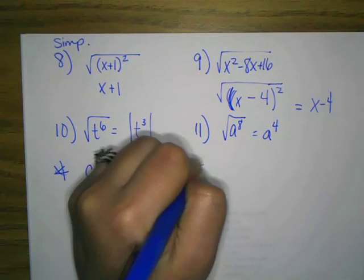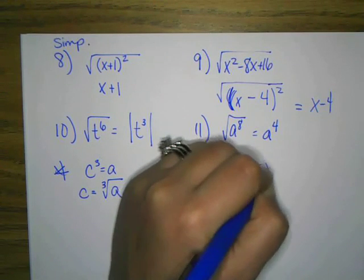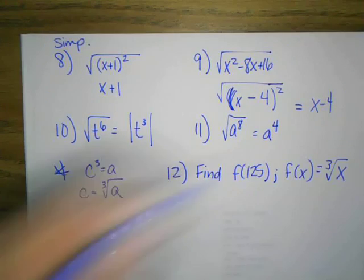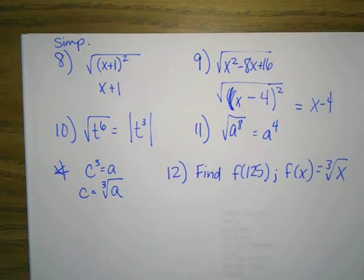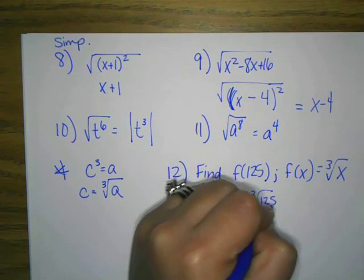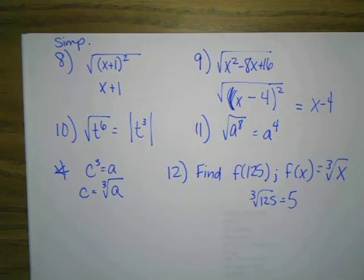Number 12. Find f of 125 if f of x equals cube root of x. So again, we plug 125 in for x. Cube root of 125 is 5, you should be saying.